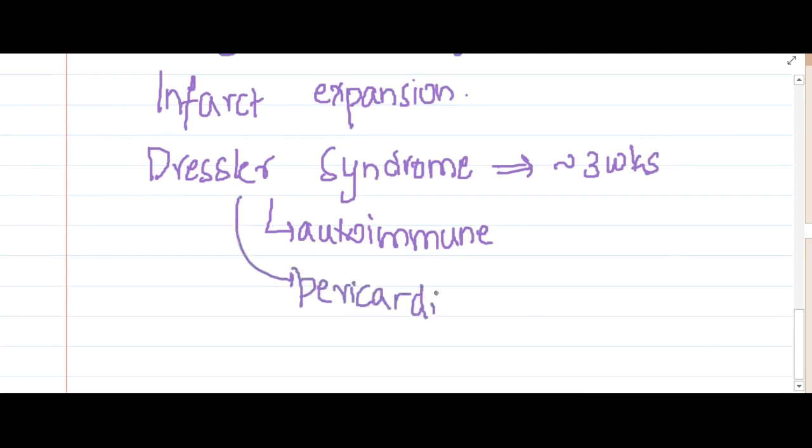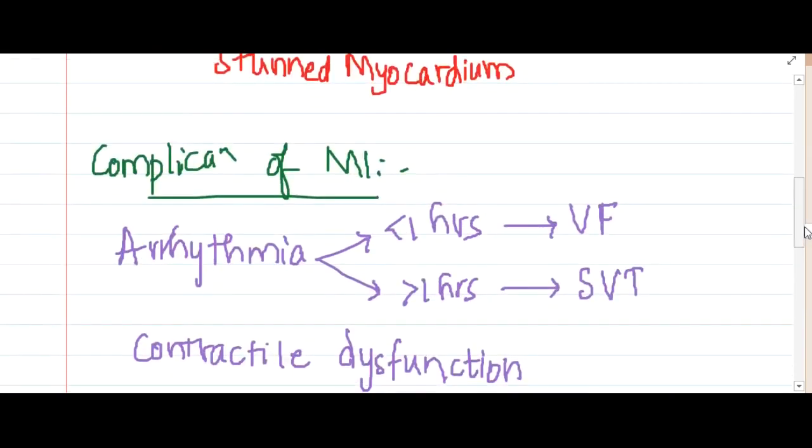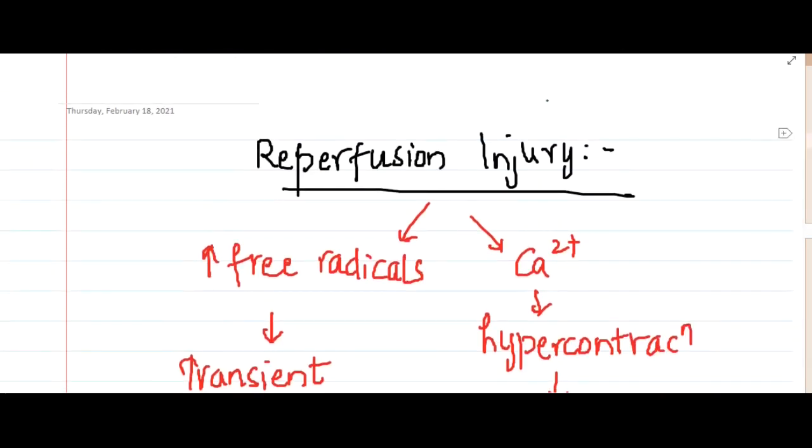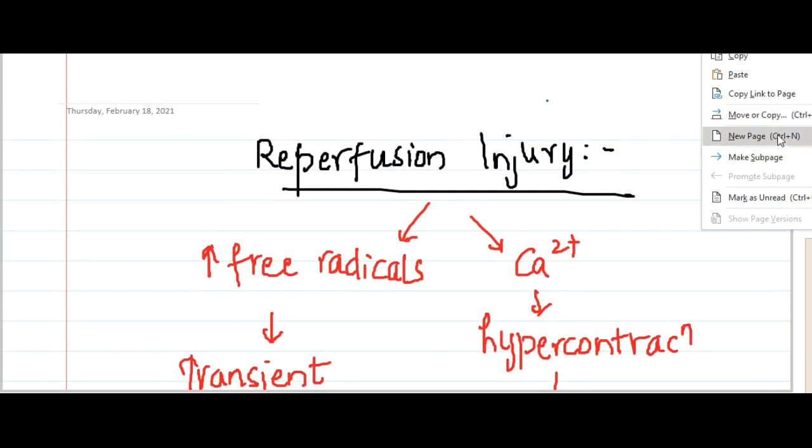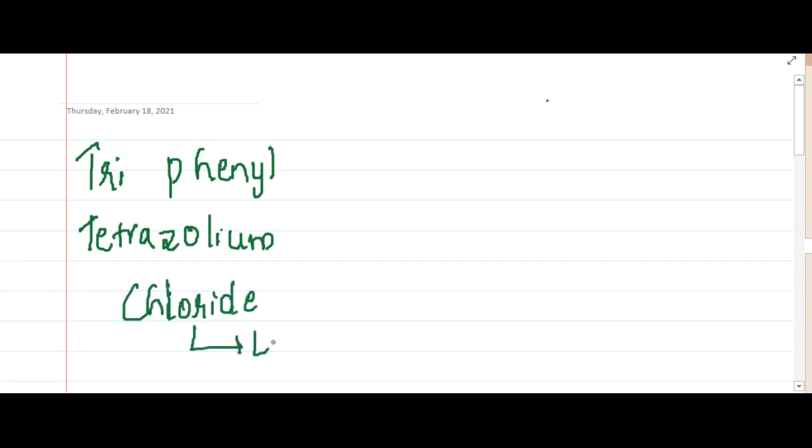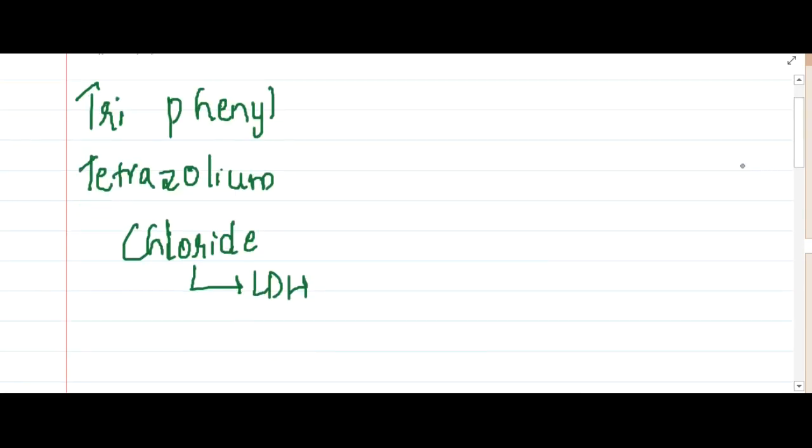So these are the main complications of myocardial infarction. One more thing I forgot to tell you: there is an important stain used to study the heart grossly in myocardial infarction. We have a stain called triphenyl tetrazoleum chloride stain. This TTC stain will stain LDH.